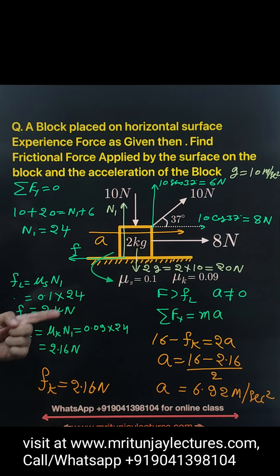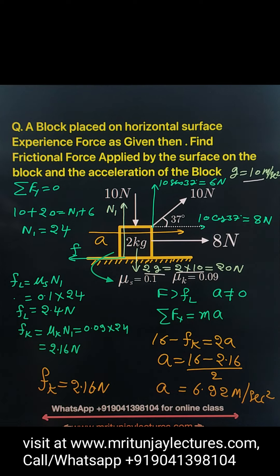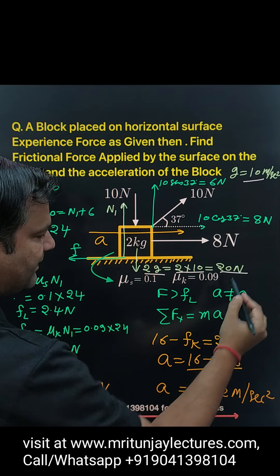First of all, make a free body diagram of that block. Mg always works downward, so 2g equals 2 times 10 because we have taken g equals 10, so that is 20 Newton.